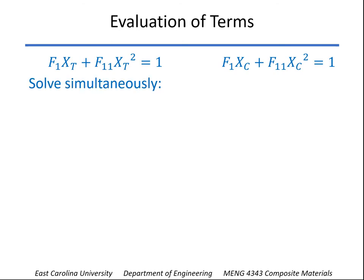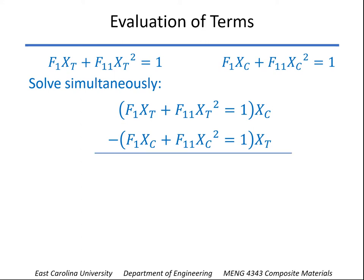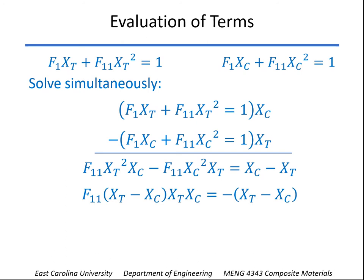Now we can solve those simultaneously. We'll take the first equation and multiply both sides by x of c. Take the second equation, multiply through by x of t. And if we subtract the second from the first, that'll eliminate the F1 terms, and we'll be able to solve for the F1,1 term here.